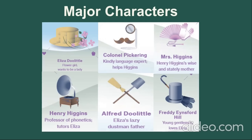Eliza Doolittle is the main character in the story. She is first introduced as an unpolished, foul-mouthed flower girl, but is transformed into a beautiful woman. Next is Professor Higgins. Professor Higgins is a linguist who believes he can transform Eliza Doolittle into a duchess in six months. He is an intelligent man, but is also disrespectful to others, despite their social class, and extremely arrogant.